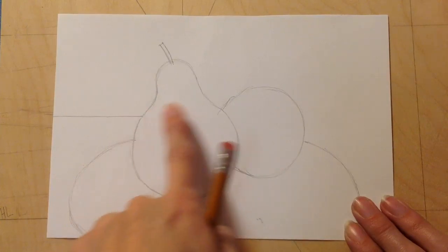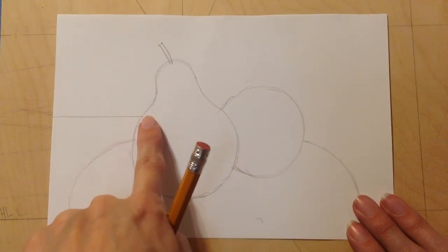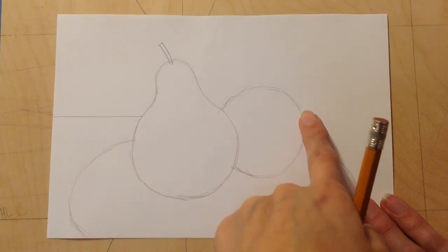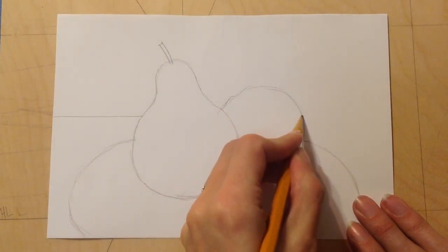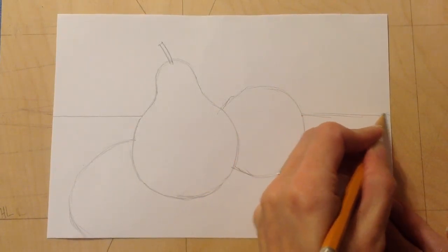Then, I imagine that the table continues. So I have to do the same thing I did with the plate. I go behind the fruit to the other side and make a straight line that goes to the other side of my paper.